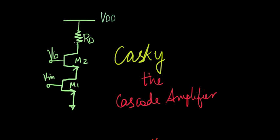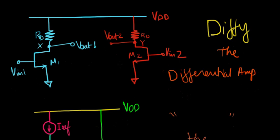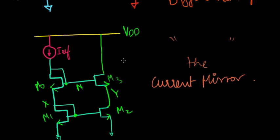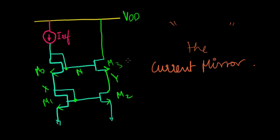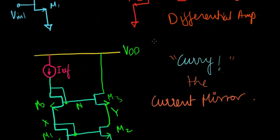This Christmas, put your hands together for Caskey the cascode amplifier. We have Diffy the differential amplifier, and we have the current mirror. Oh, Merry Christmas everybody! We're going to be talking about cascode amplifiers, differential amplifiers, and current mirrors over this vacation so that it's all ready and set to go before we start the new semester.